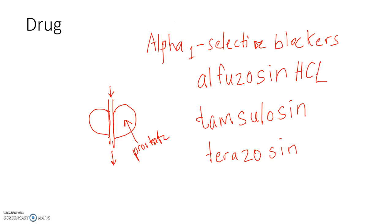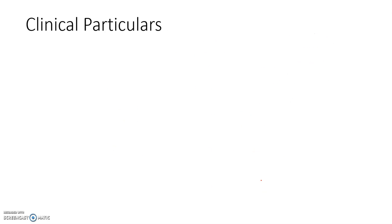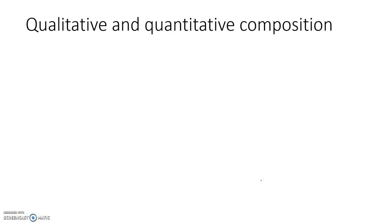Next, we're going to talk about doxazosin. Doxazosin is very similar to alfuzosin, except that I'm not aware of the drug having any modified release form. We only have tablets, normal tablets for doxazosin.